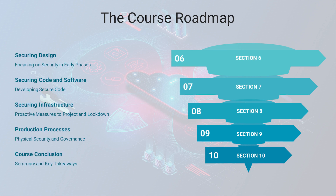Section five will focus on the practical implementation of tools and processes to utilize DevSecOps in your organization. Section six will focus on building security in the design phase. Securing code and software will be the focus of section seven. Section eight's topic will be securing infrastructure. In section nine, I will focus on the security of your production processes after software release. Finally, I will close out the course in section ten with an overview of significant concepts and additional resources for you to consider.